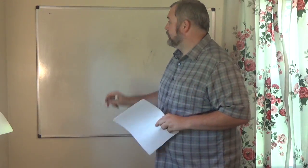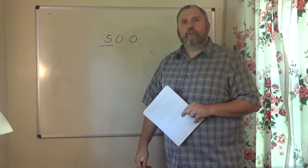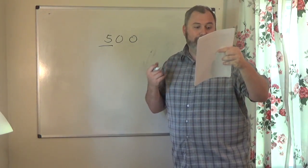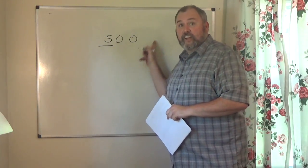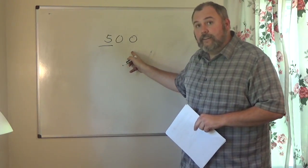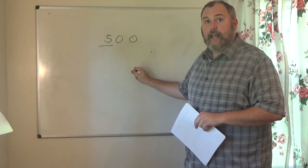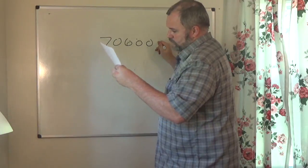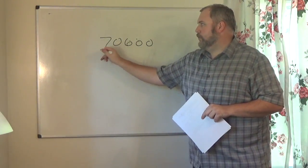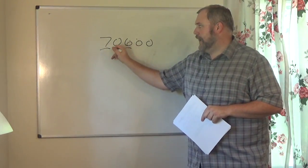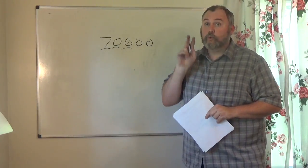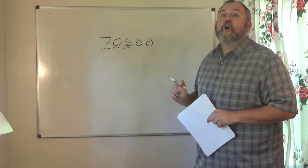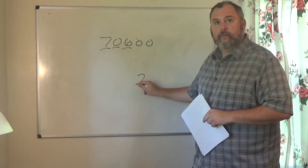Let's go through the rest of the chart. 500 — go through your rules. Rule two doesn't help. Rule three does not help. Rule four does not help. Rule five: zeros at the end of a whole number are not significant. 500 is a whole number and the zeros are at the end — these are not significant digits. So the number 500 only has one significant digit. 70,600 — automatically the 7 and the 6 from rule one. The zero between them is significant because it's between two significant digits (rule two). The trailing zeros at the end of the whole number are not significant. So this number only has three significant digits.